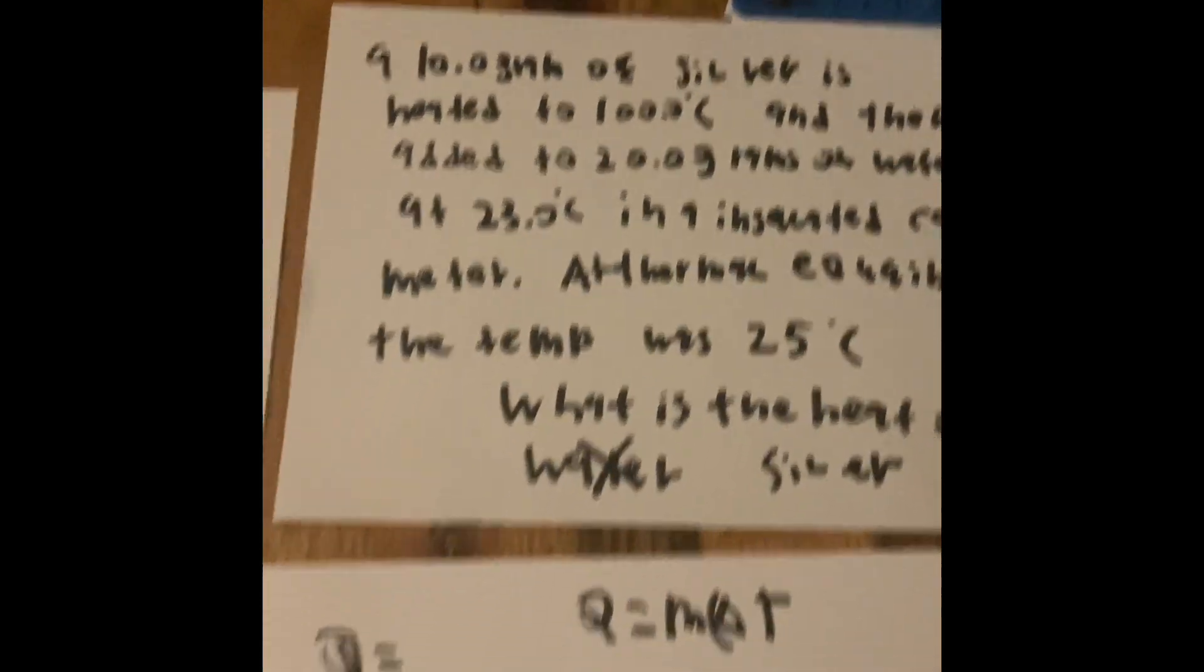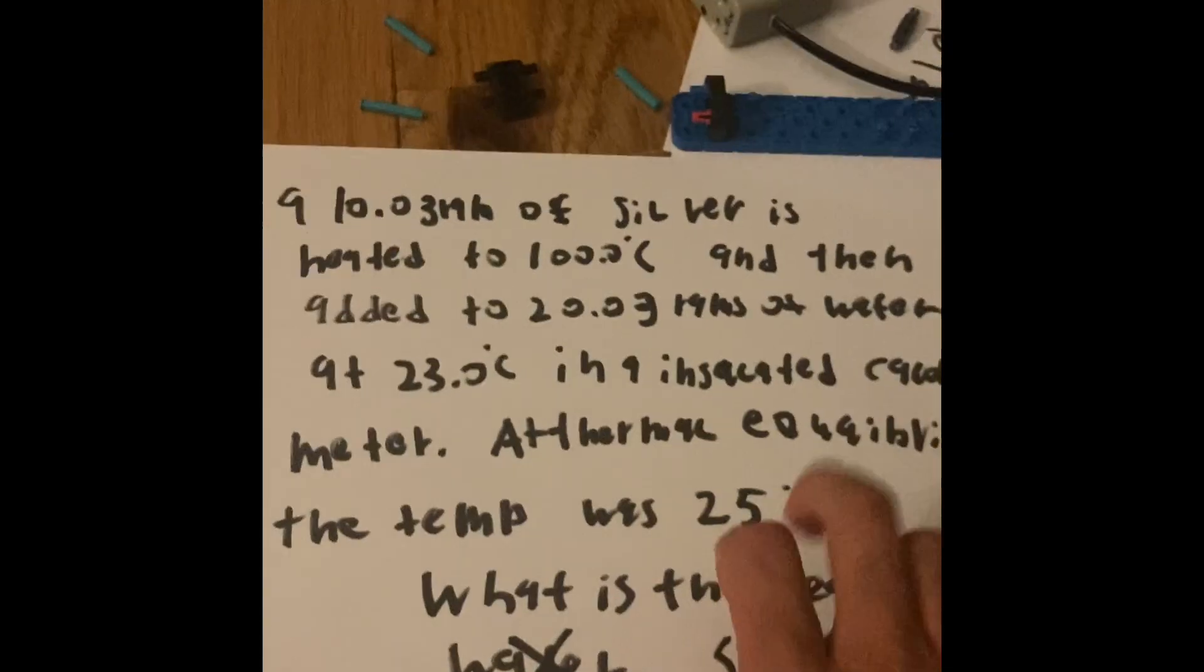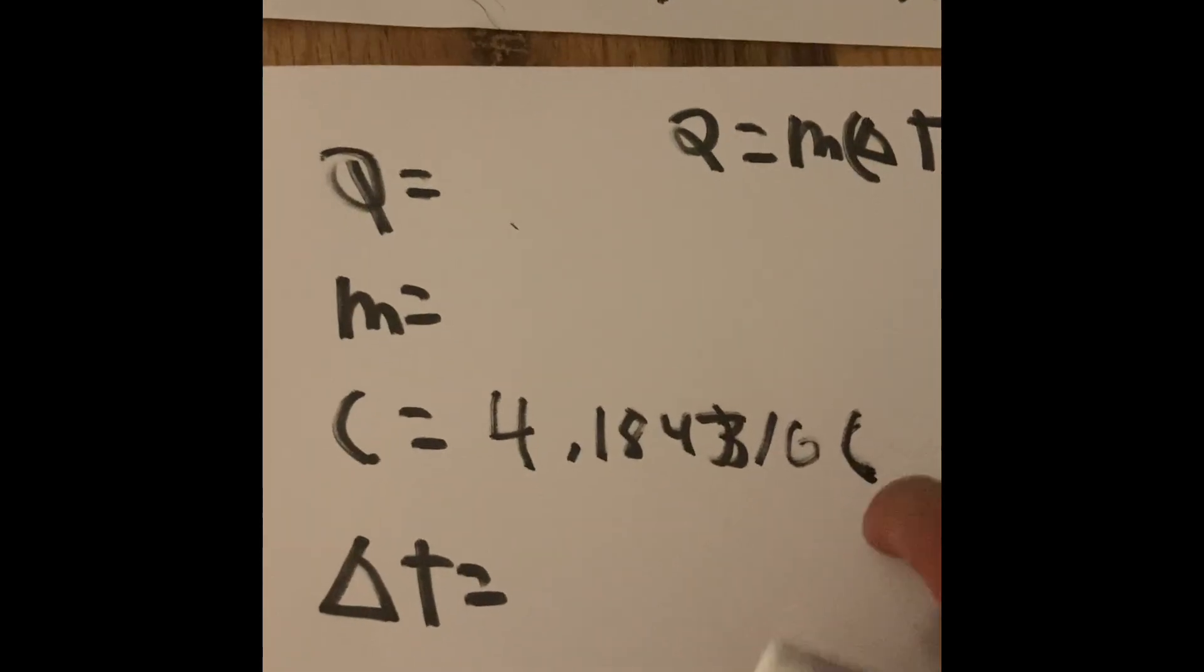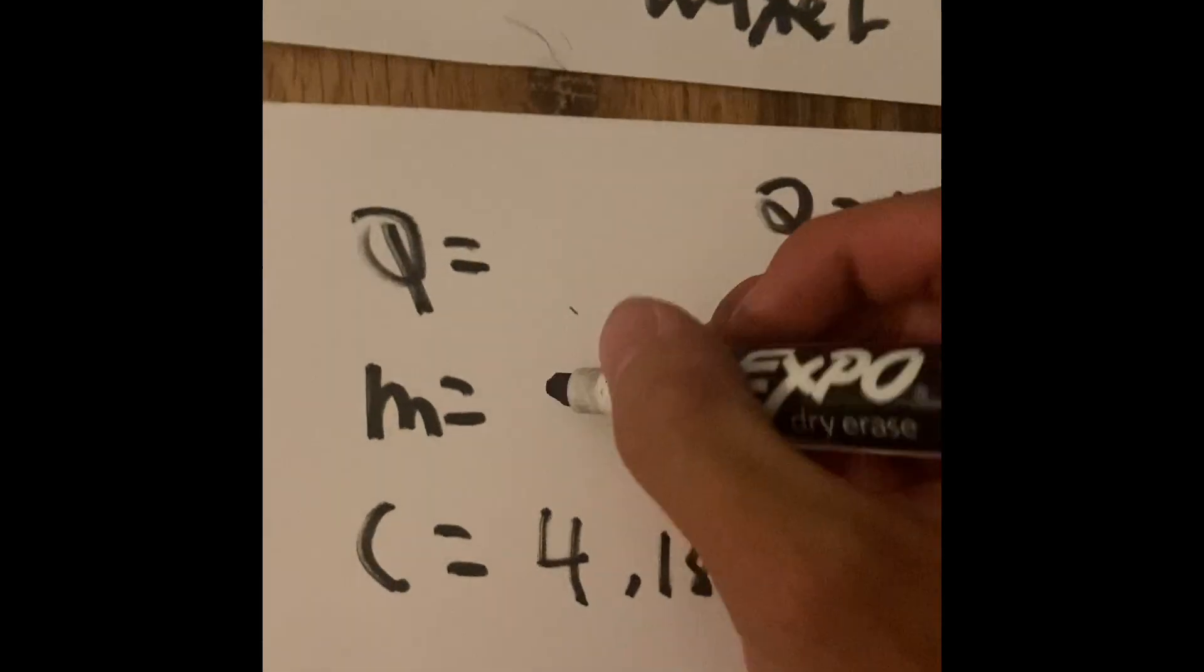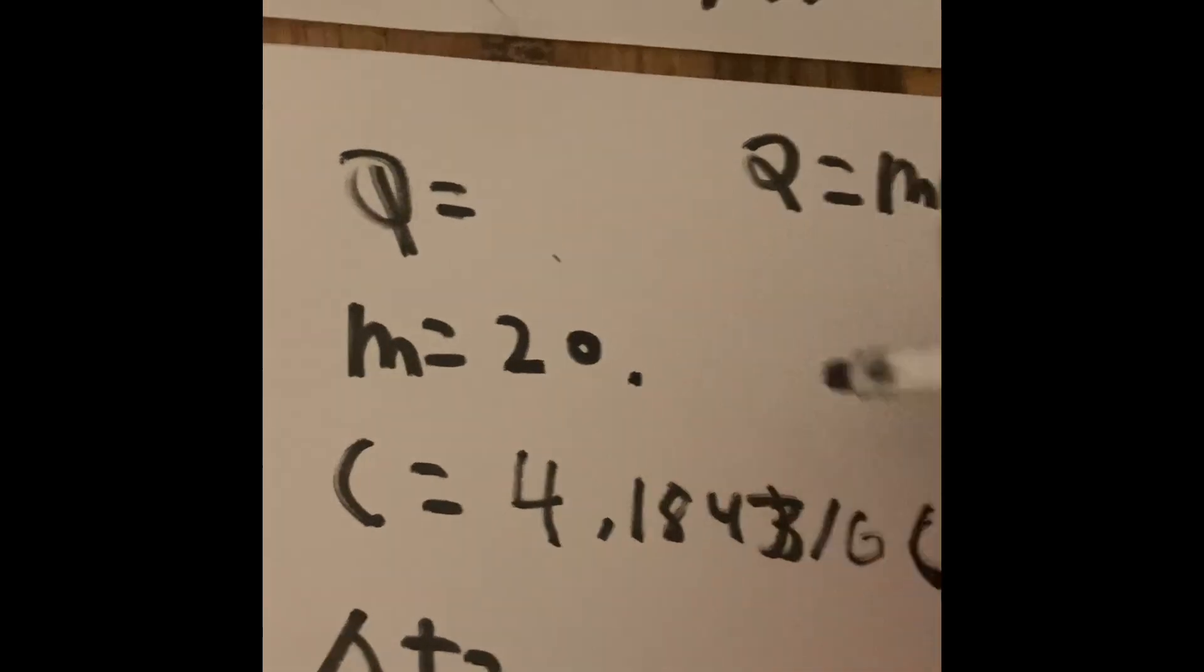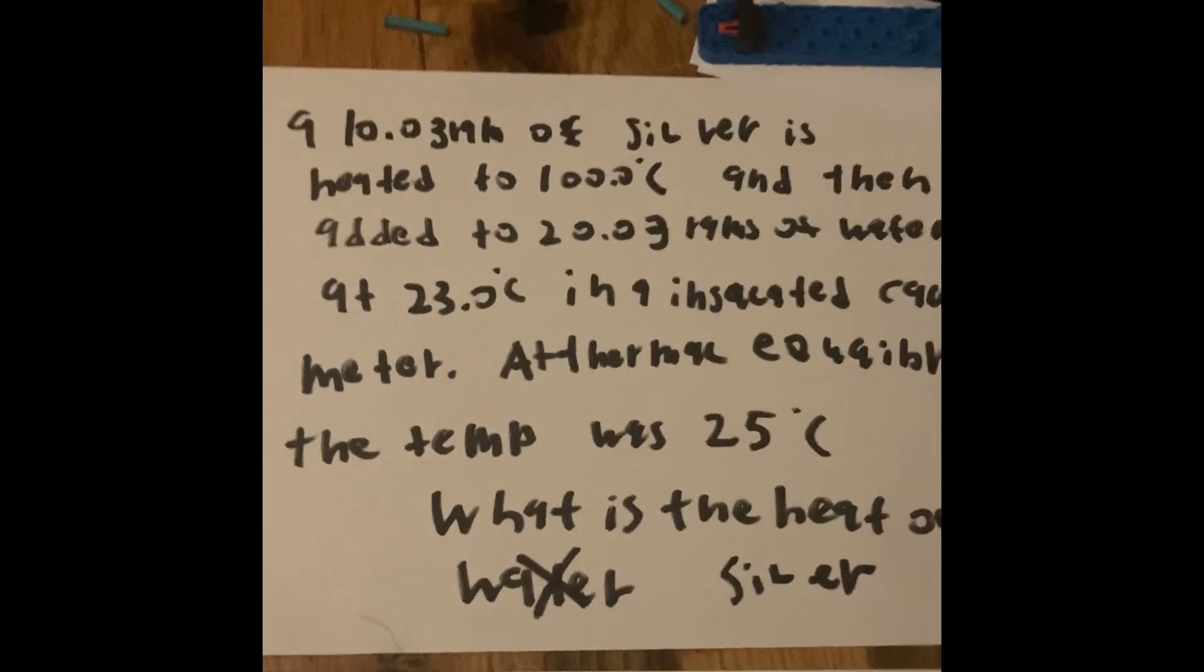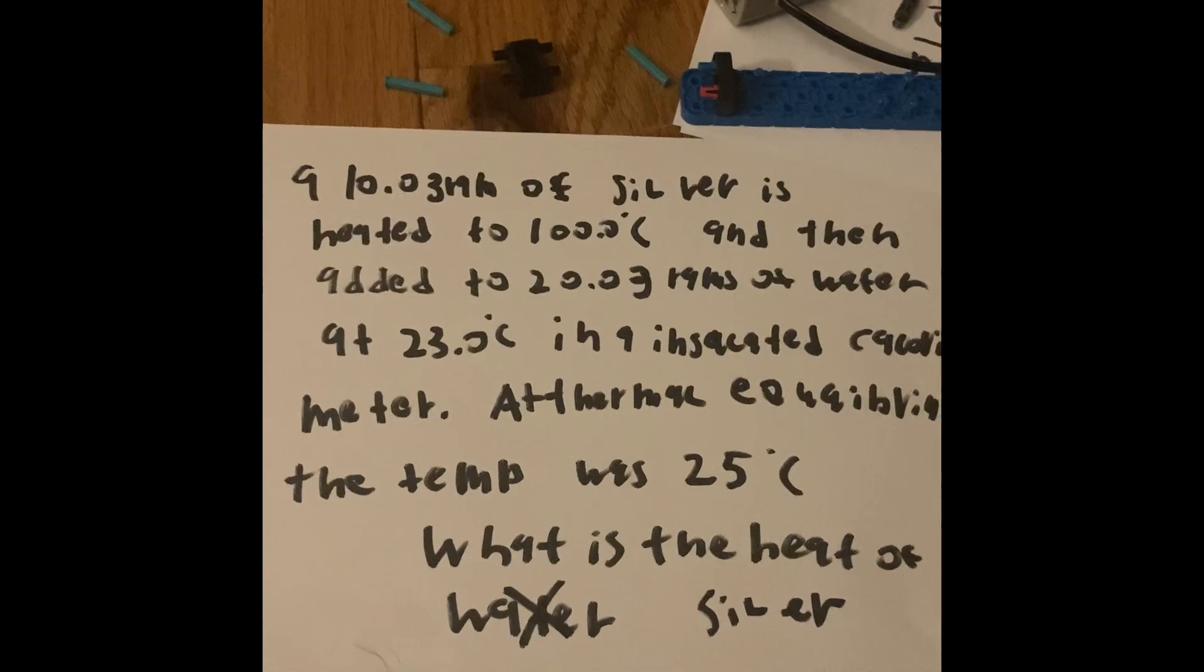Number two, that is the specific heat of water. Any problem that says water on it means this is always the specific heat. We are going to put 20 grams as the mass, because that is what's stated as we put the cube in 20 grams of water.